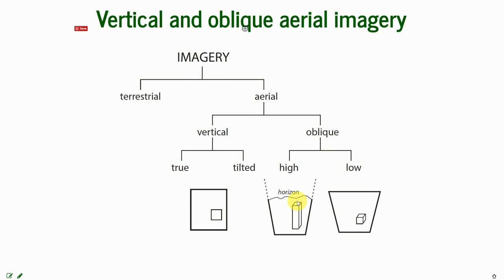There are two kinds of oblique imagery: low oblique, when the horizon is not visible in the photo, and high oblique, when the horizon is visible.